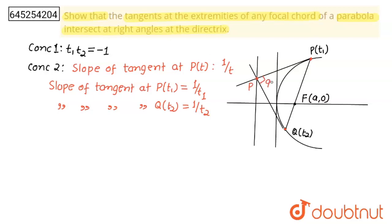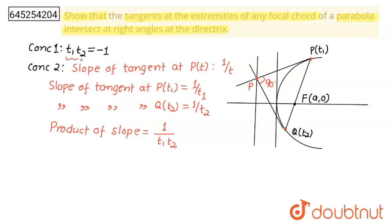Now we need to prove that this intersection point lies on the directrix. The equation of the directrix for parabola y² = 4ax is x = −a. So we need to find the x-coordinate of the intersection point A. If the x-coordinate is −a, then we can say that point A lies on the directrix.